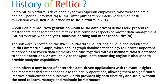Reltio's core technology uses Cassandra, a NoSQL database, to speed up operations and handle various database capabilities. Being a NoSQL database, it can handle both structured and unstructured data easily. Apache Spark is used as the data processing engine, enabling Reltio to provide analytics capabilities. Together, these power Reltio's enterprise data-driven applications.